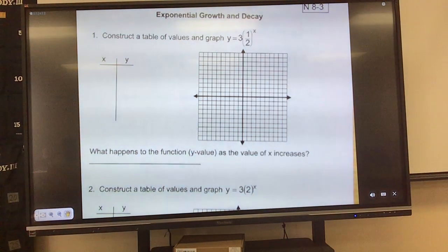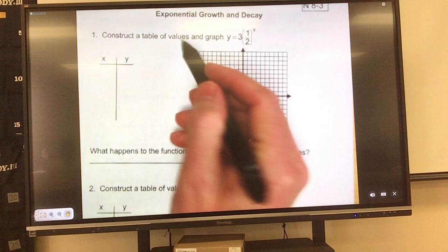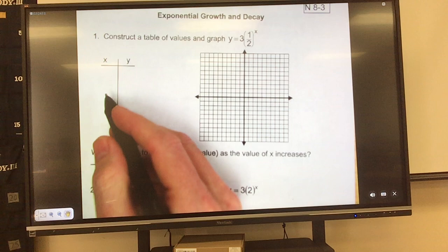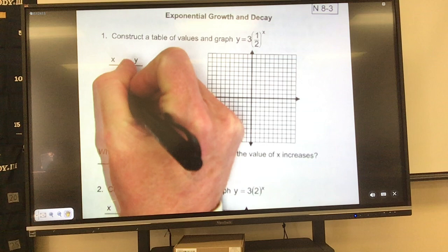Okay, this is Notes 8-3. The first thing we see in Exponential Growth and Decay is we have an equation, we have a table, and we have a graph. So it's telling me it wants me to graph this guy here. All of our tables we're going to do exactly the same. We're going to put zero right in the middle, so we're going to go two less, so negative one, negative two.